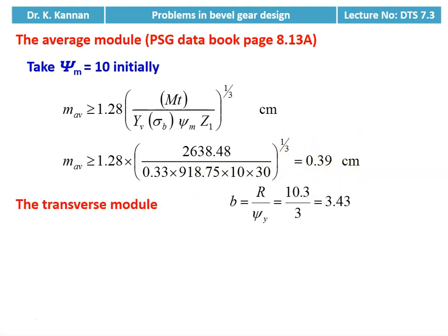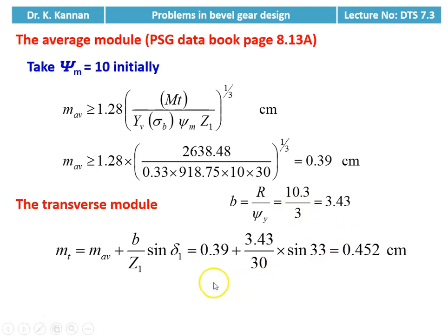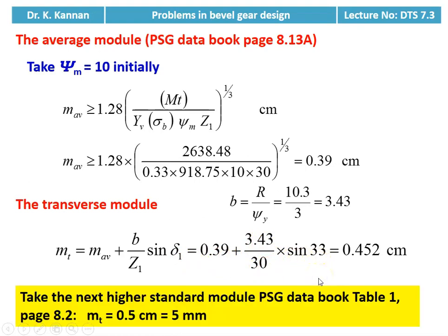Now we calculate the transverse module. We require b = R / psi_y = 10.3 / 3 = 3.43. Transverse module = average module + b / (Z1 × sin(delta_1)) = 0.39 + 3.43 / (30 × sin(33°)) = 0.452 centimeter. We fix the next higher standard module from the data book, table 1: standard transverse module = 0.5 centimeter (5 millimeter).